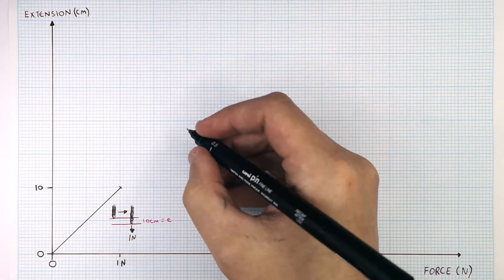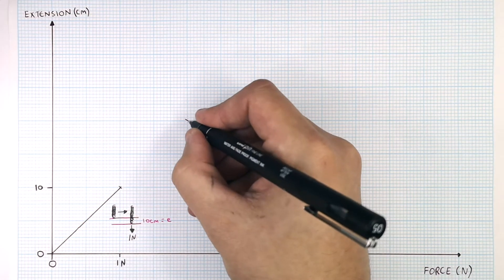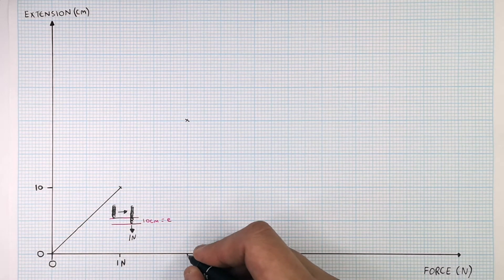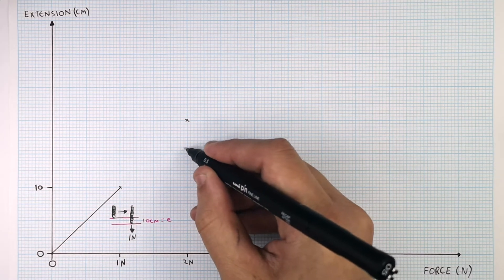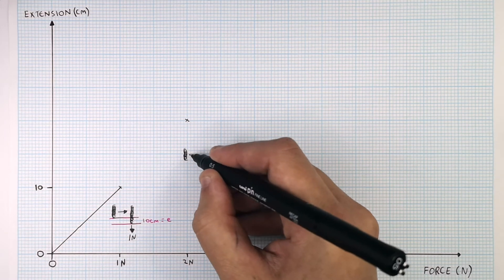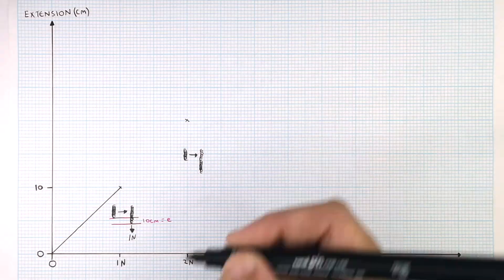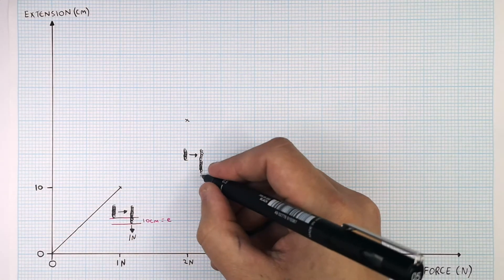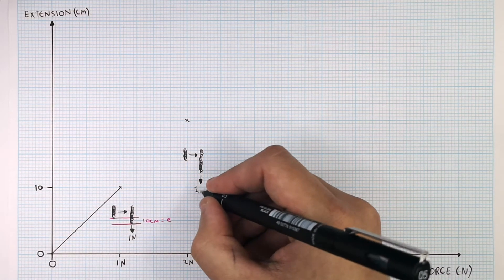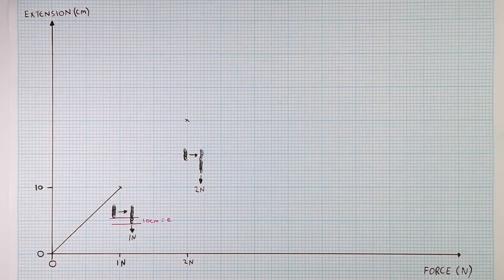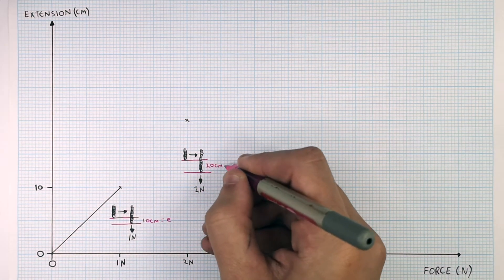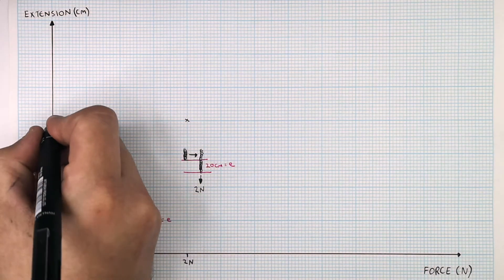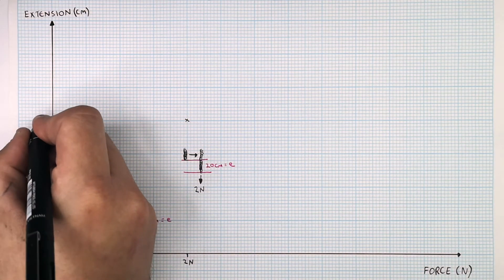We've now added an additional 1 newton to this spring, so we've now got a force of 2 newtons acting on the spring. The extension of the spring is 20 centimetres — this spring has now extended by 20 centimetres.